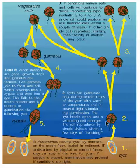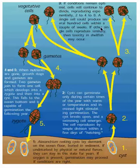The vegetative stage is a stage that reproduces asexually, and this reproduction can occur extremely rapidly, producing many millions of cells in the overlying water column in a short period of time.